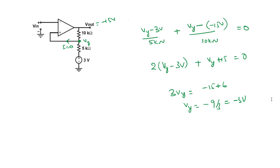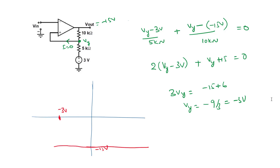From this, we understand that when the output is initially at minus 15 volts, the lower threshold point is minus 3 volts. When V_in is less than minus 3 volts, the positive terminal has a higher voltage than the negative terminal, which brings the output to plus 15 volts. This completes the hysteresis curve.